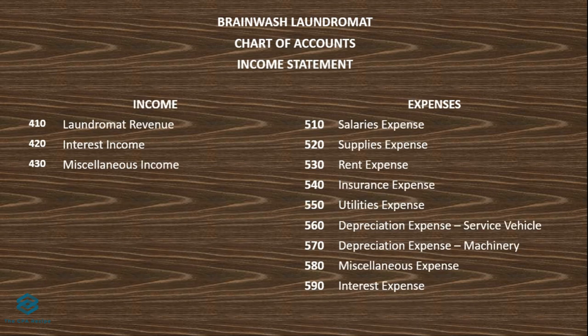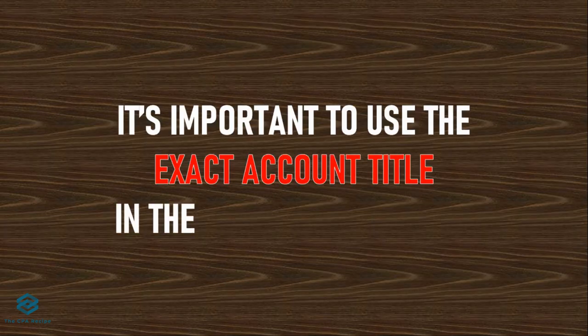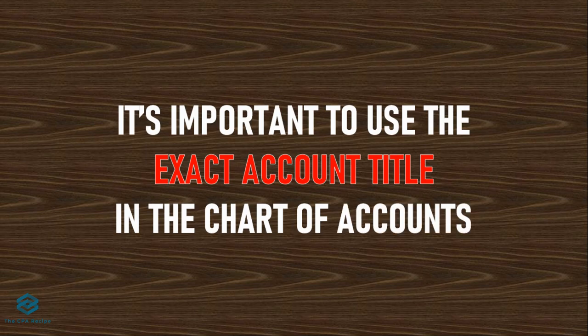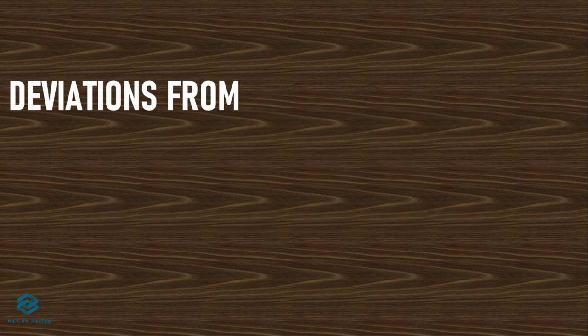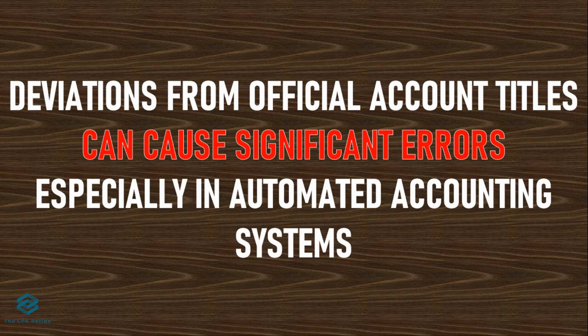Here are the income statement accounts. Of course, the coding is still present. Income accounts begin with 4, while expense accounts begin with 5. It's important that when we make entries, we use the exact account title. Wrong spelling is not allowed — it can create significant errors, especially in accounting systems that are automated.